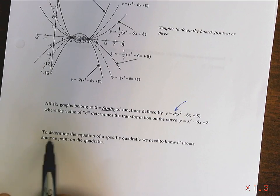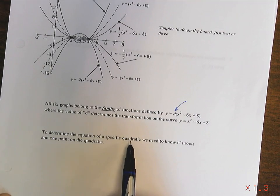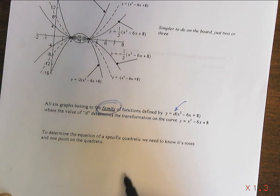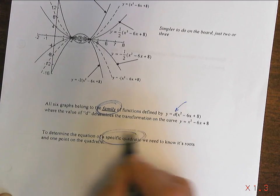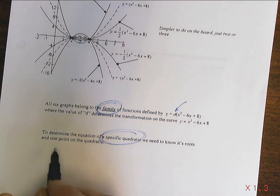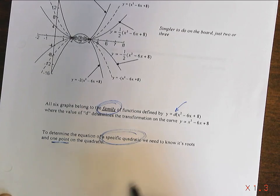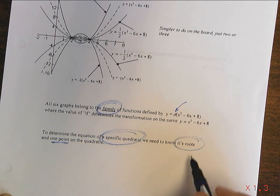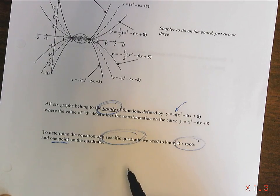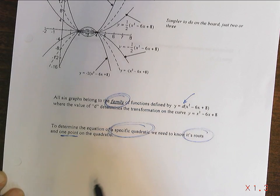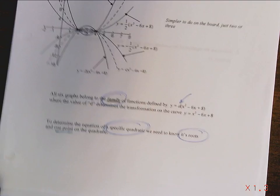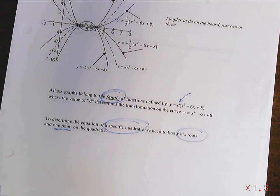Notice what it says here. To determine the equation of a specific quadratic, so rather than the family, if I want a specific quadratic, I need to know one point on the quadratic. It's not good enough just to know its roots. The roots are good enough to get the family. But if I want to know the specific member of the family, I need his coordinates. Or hers. Not being sexist here. Either one.